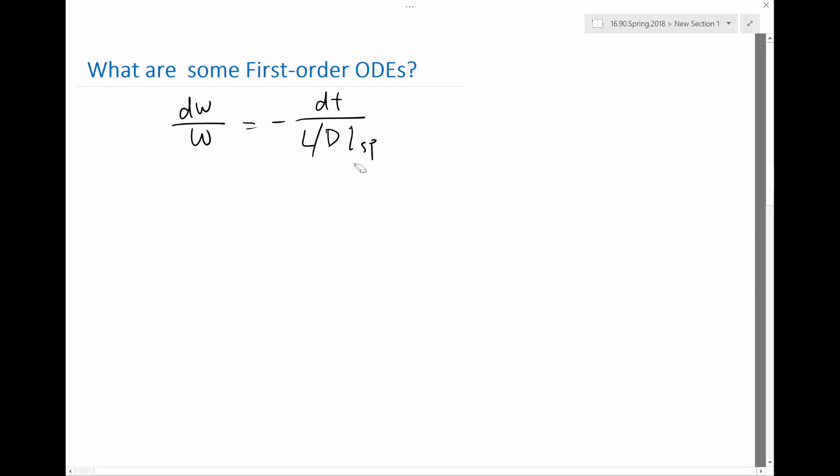If you write it in the proper form, your W, your weight is a function of time, right? So the canonical way to write it is dW/dt would be equal to minus W divided by all of this here, L over D times ISP, right?